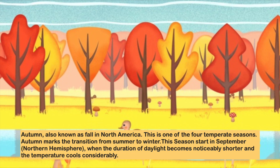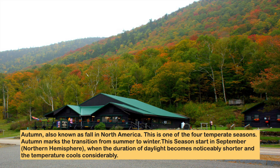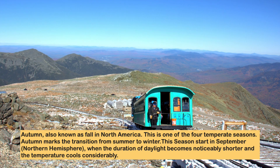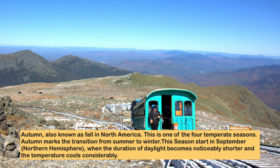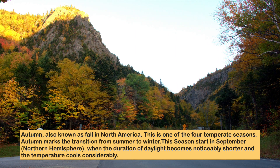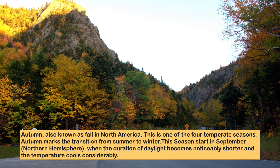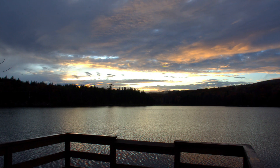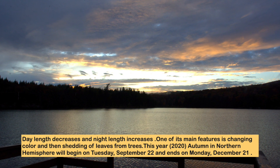Autumn, also known as fall in North America, is one of the four temperate seasons. Autumn marks the transition from summer to winter. This season starts in September in the Northern Hemisphere, when the duration of daylight becomes noticeably shorter and the temperature cools considerably. Day length decreases and night length increases.